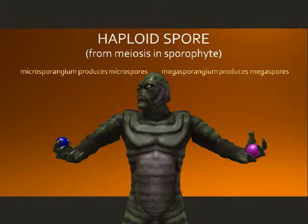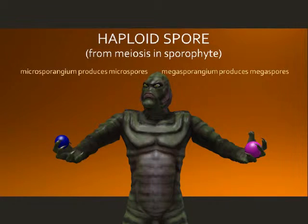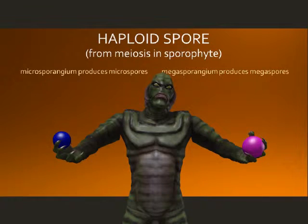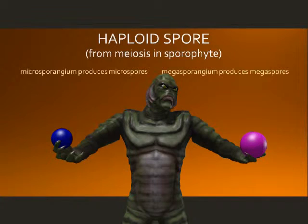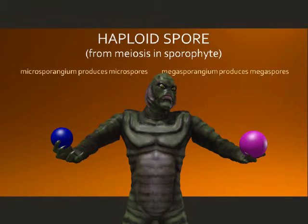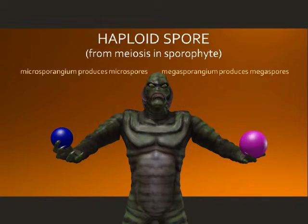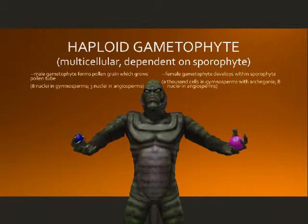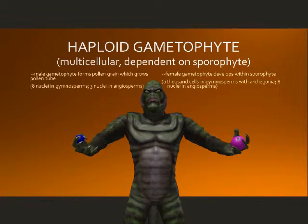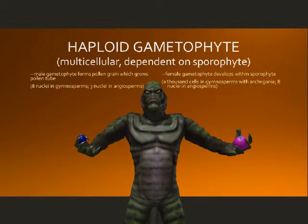In the life cycle of seed plants, the sporophyte generation develops sporangia, where spore mother cells undergo meiosis. Microspores are produced in microsporangia, and megaspores are produced in megasporangia. So seed plants are heterosporous — they produce two different types of haploid spores. The haploid spores then undergo mitosis and produce the haploid gametophyte.